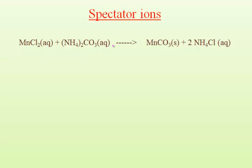This is a balanced chemical equation and we will write spectator ions for this given equation. Spectator ions are the ions which are present on both sides of the equation. To find out the spectator ions, we write reactants and products which are in aqueous state into ions.